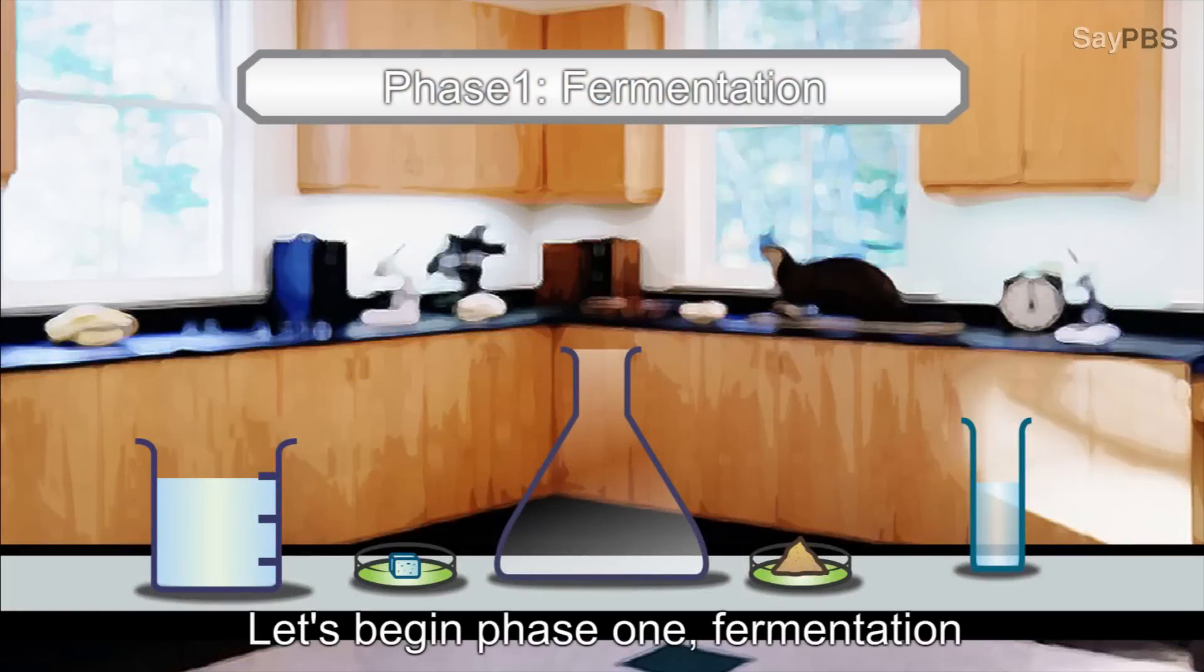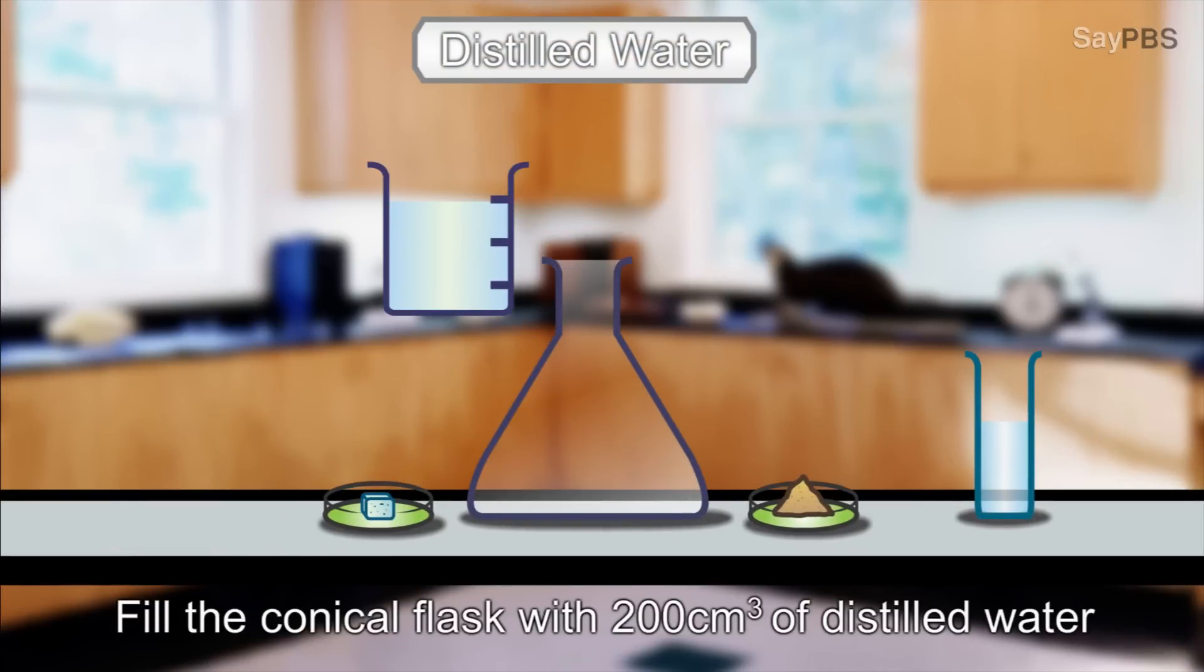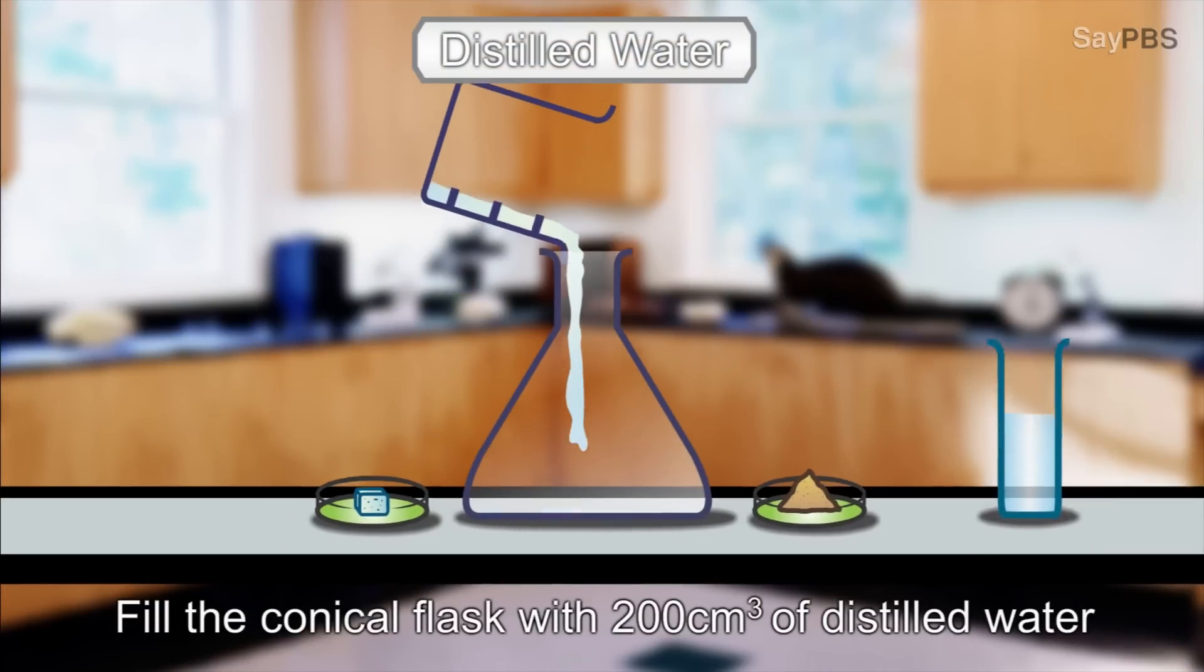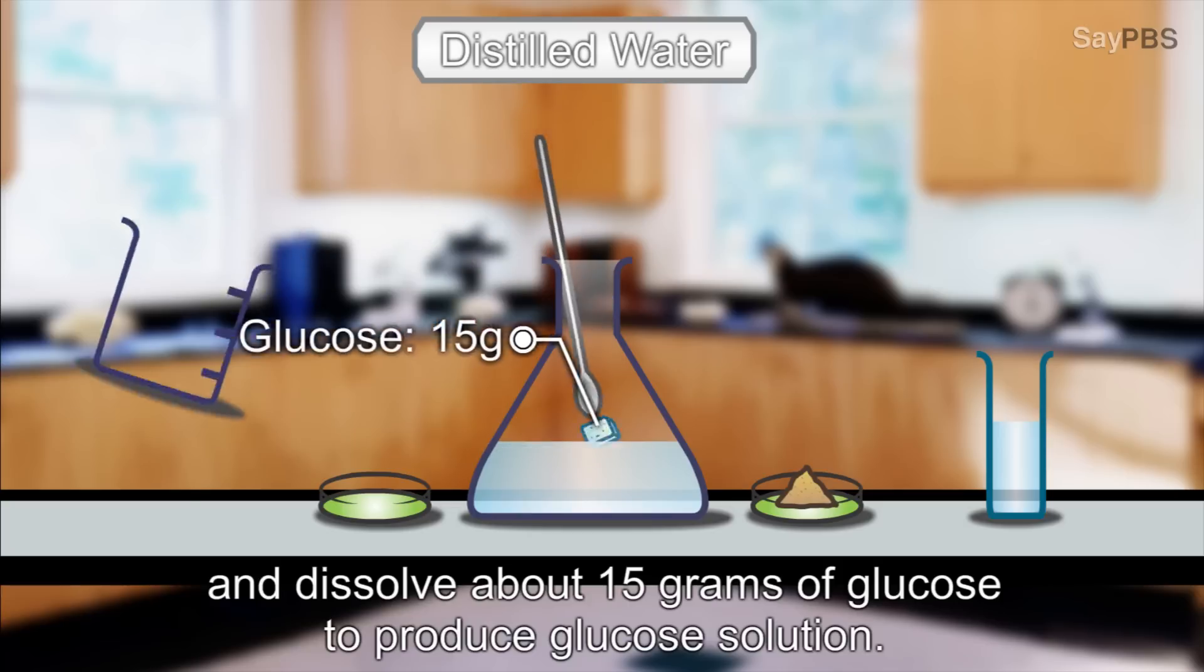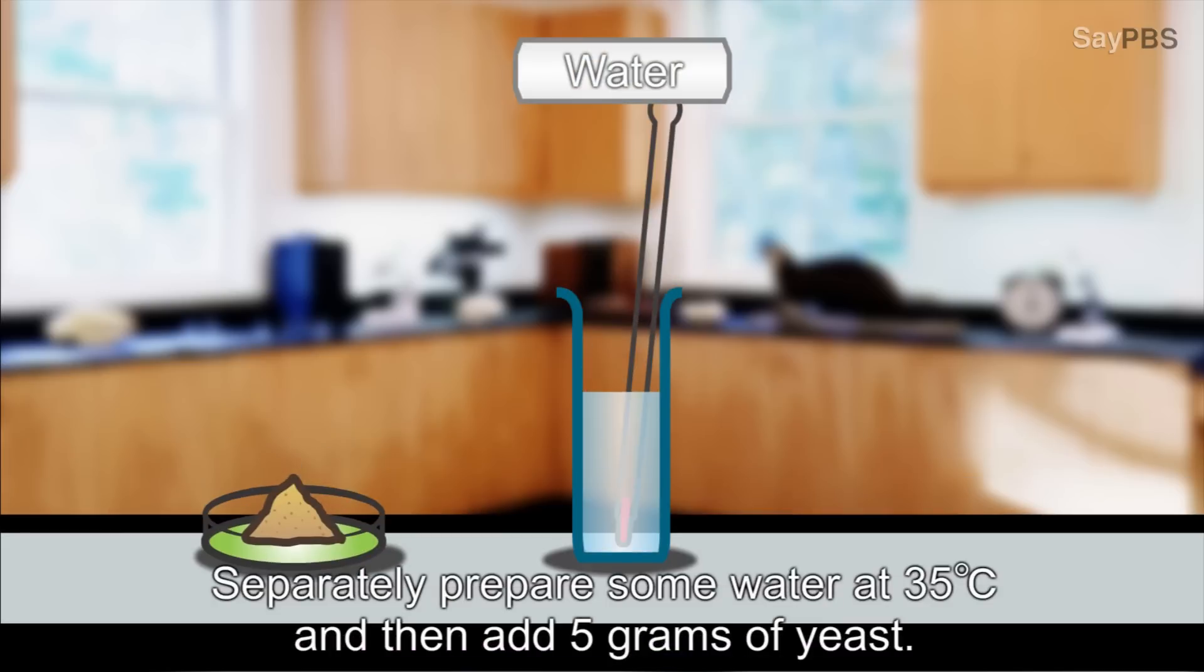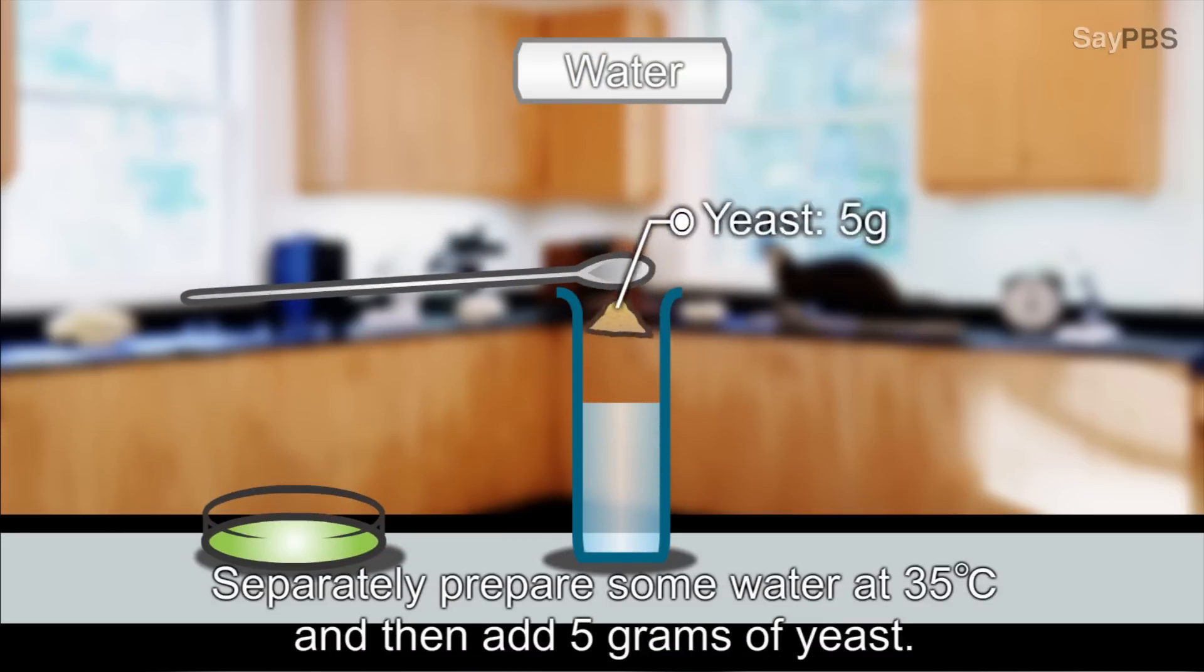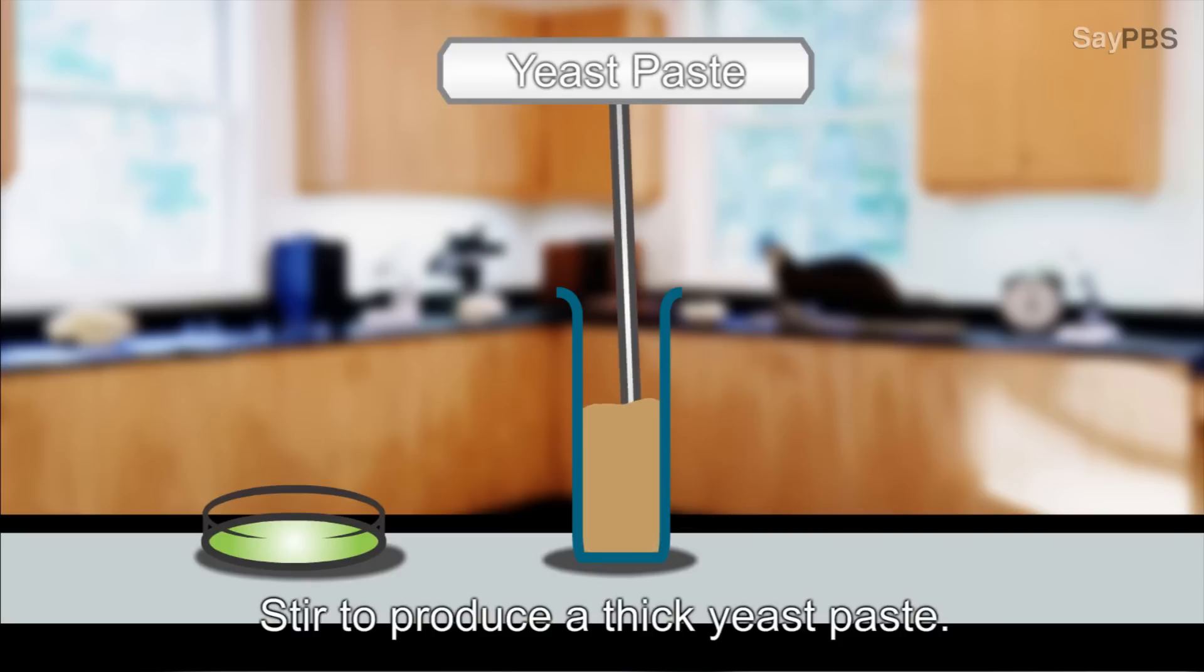Let's begin phase one, fermentation. Fill the conical flask with 200 cubic centimeters of distilled water and dissolve 15 grams of glucose to produce a glucose solution. Separately, prepare some water at 35 grams Celsius and add yeast, stir to produce a thick yeast paste.